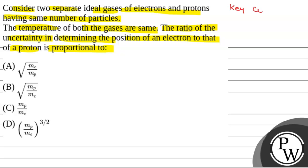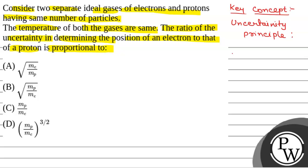First of all, we will see what will be the key concept used to solve this question. The key concept will be from the uncertainty principle: delta x into delta p is greater than or equal to h by 4 pi, where delta x is the uncertainty in position and delta p is the uncertainty in momentum.